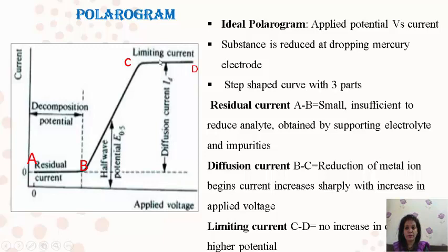The difference between the limiting current and the residual current gives the value of the diffusion current, Id. When you take half of the diffusion current, you will get the half-wave potential E½ of your salt solution. From this polarogram you gather the value of Id and can find out E½. These values are useful to calculate the concentration of the metal ion.